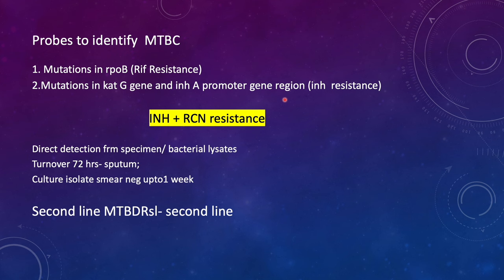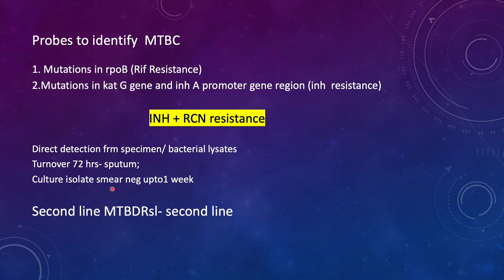So LPA not only detects MTB complex but also detects INH and rifampicin resistance. You can directly use the specimen, or use culture isolates of smear-negative samples. The turnaround time using sputum is 72 hours. Private labs will often say they can only process the sample if it is positive — meaning they wait for culture to turn positive before further processing. There is also a second-line MTB-DR SL LPA available, which can detect resistance to high-dose INH, fluoroquinolone, ethionamide, cycloserine, and linezolid.